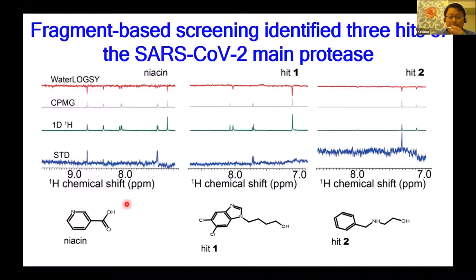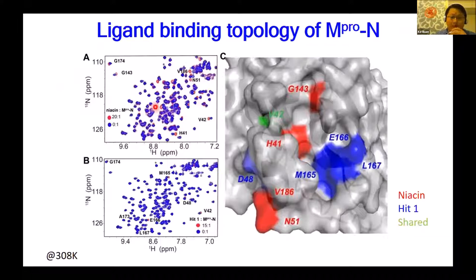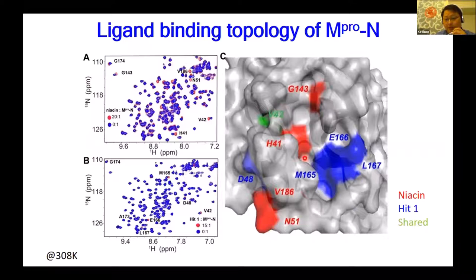We first used a fragment-based approach. The STD method gives signals for binders, and WaterLOGSY gives both signals. Based on this method, we identified three fragment types: one is a lysine derivative, one is compound 0.1 and one is 0.2. We then acquired the HSQC spectrum of the N-terminal main protease, which shares very high sequence identity with SARS main protease, allowing us to transfer the assignment directly. Based on the assignment and chemical shift perturbations, we determined the binding sites of these three fragments.